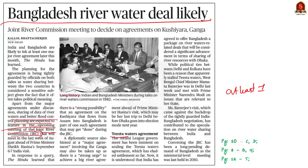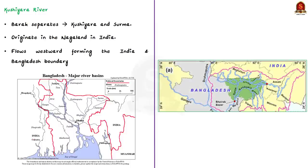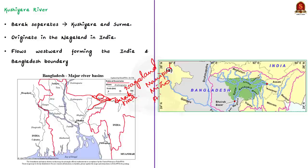The Kushiyara river is a distributary river in Bangladesh and India. It forms on the India-Bangladesh border as a branch of the Barak river — the Barak separates into the Kushiyara and Surma. The water of the Kushiyara originates in Nagaland and picks up tributaries from Manipur, Mizoram, and Assam. From its origin at the mouth of the Barak, it flows westward, forming the boundary between India and Bangladesh. There is a strong possibility that an agreement on the Kushiyara river will be concluded in the JRC meeting.